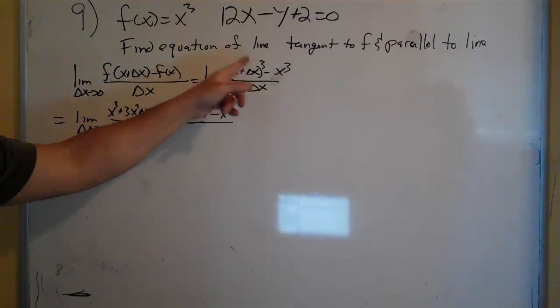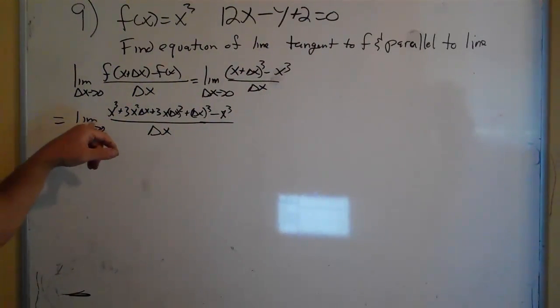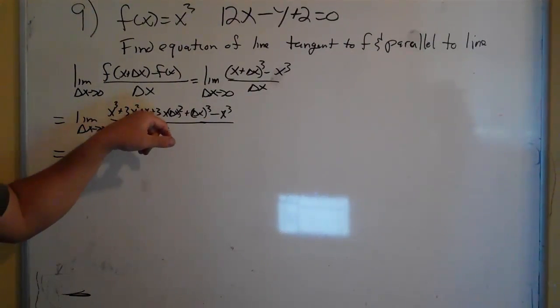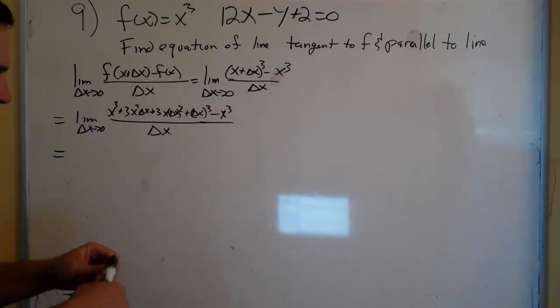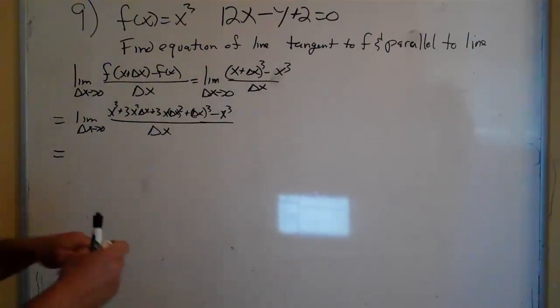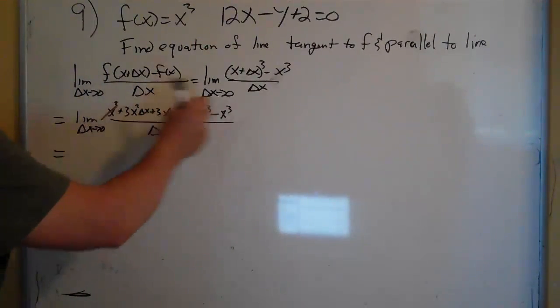Expanding the x plus delta x cubed is this. The limit as delta x goes to 0 of x cubed plus 3x squared delta x plus 3x delta x squared plus delta x cubed minus the x cubed. So the x cubes go away.